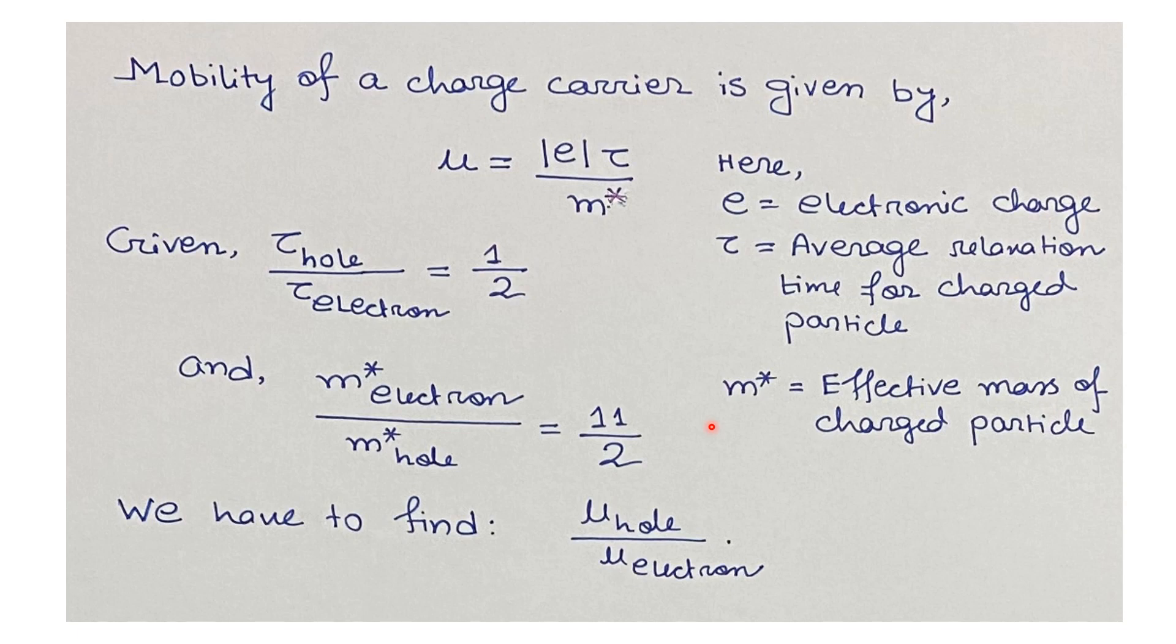The effective mass is a quantity used to simplify band structure by modeling the behavior of a free particle with that mass. In the question, the ratio of the scattering time for hole to electron is 1:2, and the effective mass ratio for electron to hole is 11:2. We have to find the ratio of the mobility for holes to electrons.